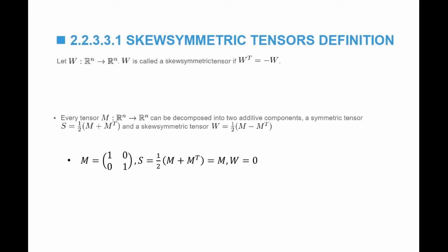For example, if I think of the matrix M that's equal to 1, 0, 0, 1, S, which is the symmetric component of M, is equal to half M plus M transpose. M is equal to M transpose, so M plus M transpose is equal to 2M. 2 cancels the half. So S is in fact equal to M, and W is equal to 0.